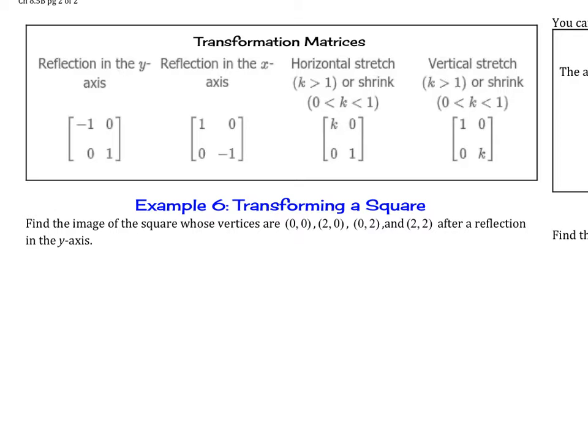We're going to find the image of the square whose vertices are (0, 0), (2, 0), (0, 2), and (2, 2) after reflection in the y-axis. So if we're doing a reflection in the y-axis, we are going to take a look at this matrix here. We're going to write this down first: [-1, 0; 0, 1].